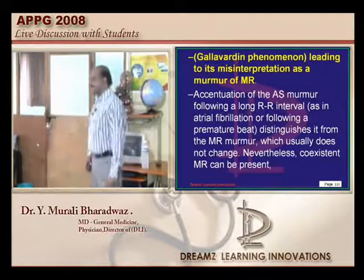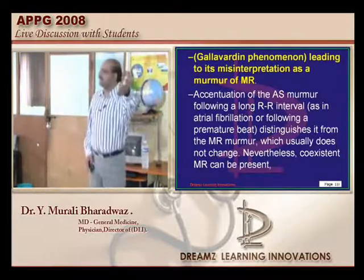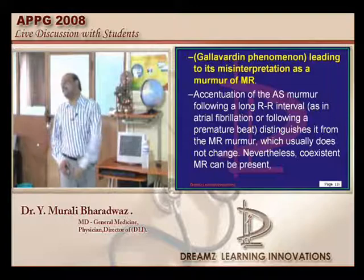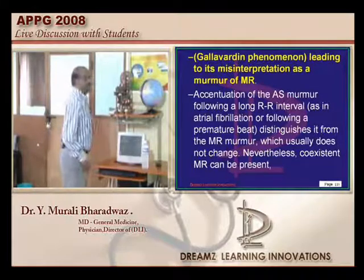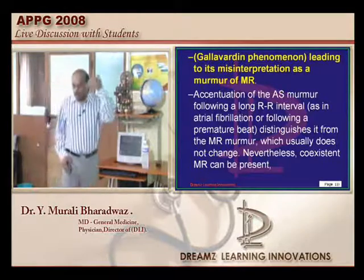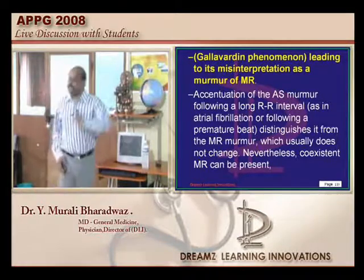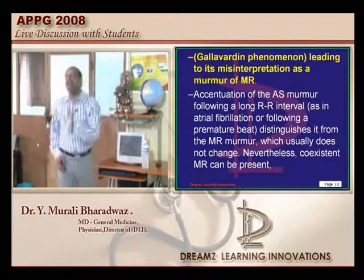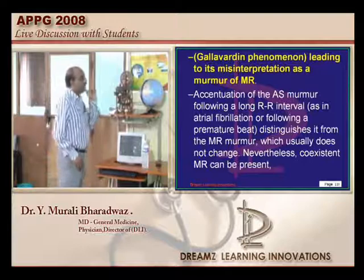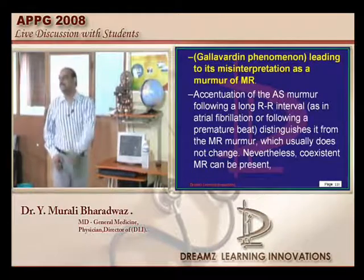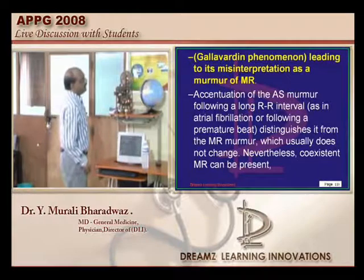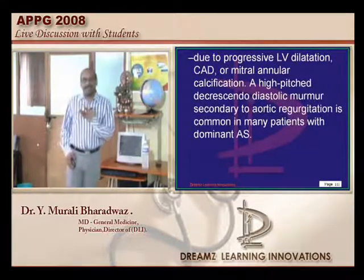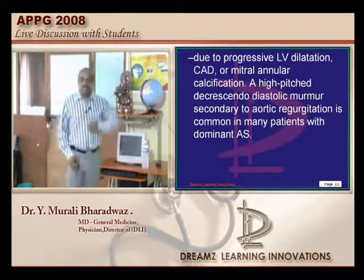There is no relationship between the intensity of the systolic murmur and the severity of aortic stenosis. However, the duration and timing are related - the more severe the AS, the later in systole (mid to late systolic) it peaks and becomes a longer duration murmur. When the left ventricle fails, the murmur becomes softer.